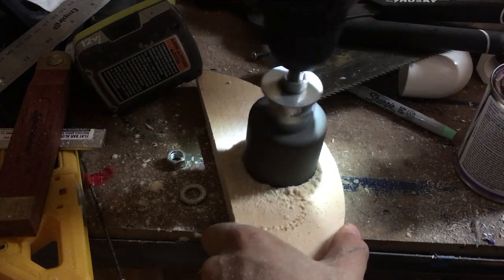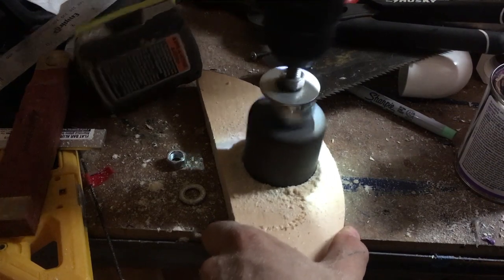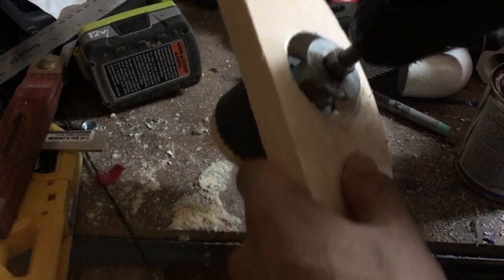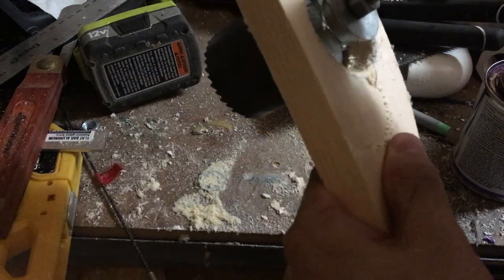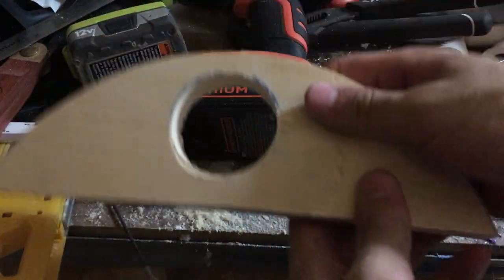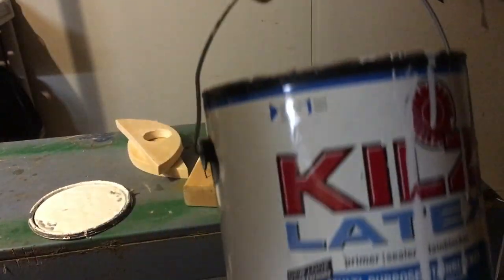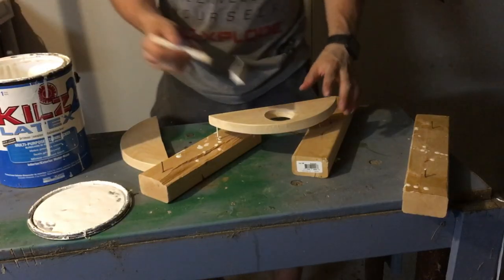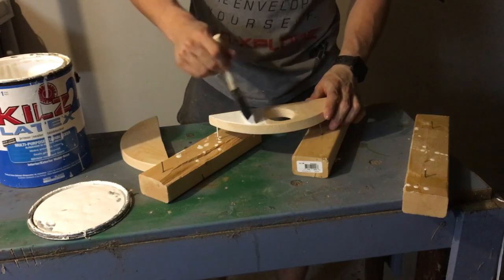I used a hole saw with a makeshift arbor to cut out the hole for the ventilation fan, but you could just as well use a jigsaw or a coping saw. I decided to seal the wood since it would be in a relatively high moisture environment, so I just used some latex paint that I had lying around.